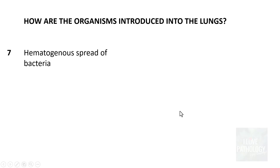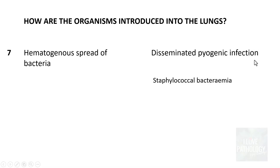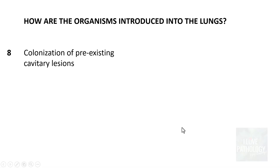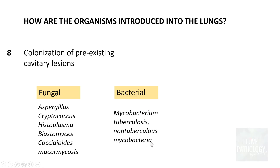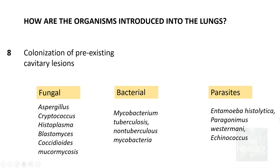Lung abscess can also result from hematogenous spread of bacteria, particularly in disseminated pyogenic infection such as staphylococcal bacteremia. Abscesses can also result from colonization of pre-existing cavities in the lung parenchyma — for example, from complications of chronic pneumonias — where organisms colonize and cause lung abscess. The most common are fungal: Aspergillus, Cryptococcus, Histoplasma, Blastomyces, Coccidioidomycosis, Mucormycosis, and Echinococcus can all result in lung abscess.